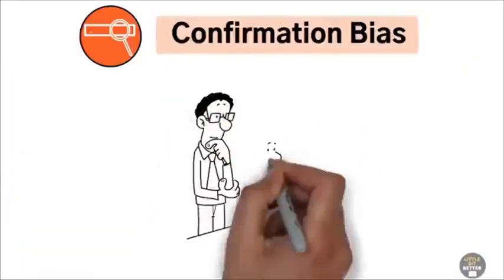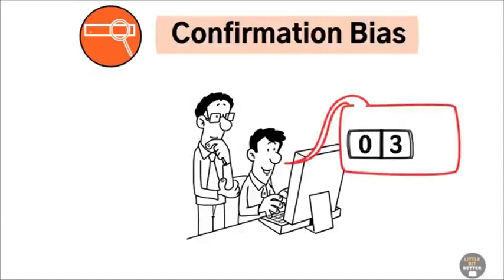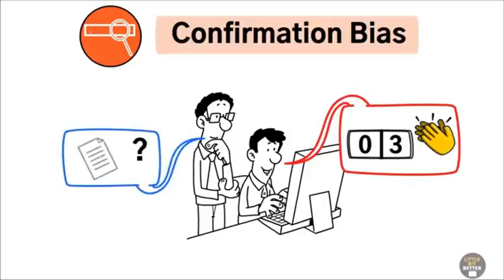Confirmation bias. Confirmation bias is when people only notice things that support what they already believe. For example, if you think your favorite soccer team is the best, you might only notice the games they win. To avoid this, actively look for information that challenges your views. This helps you make decisions based on all the facts, not just what you want to believe.